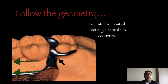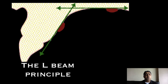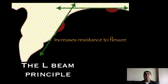It is indicated in most partially edentulous scenarios. There are going to be certain scenarios where you won't be able to use the AP strap — we'll come to that later. Now, why is this design so rigid? It follows the two planes of the hard palate: one strap is in the anterior plane and the posterior strap on the posterior plane. This particular design gives it something called the L-beam effect, or it follows the L-beam principle, which increases the resistance to flexure of this major connector. That's the reason why this major connector is absolutely rigid.